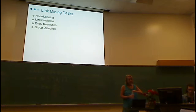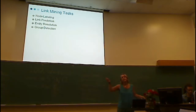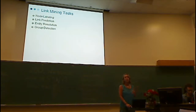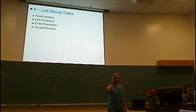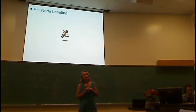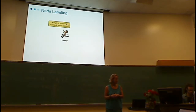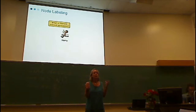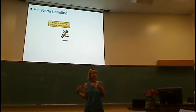I'm going to talk about a couple of link mining tasks and algorithms, but first I want to review a collection of them. The simplest one I'll call node labeling: you have some entity and you're trying to predict some label for it.